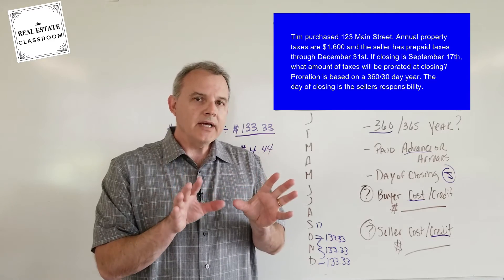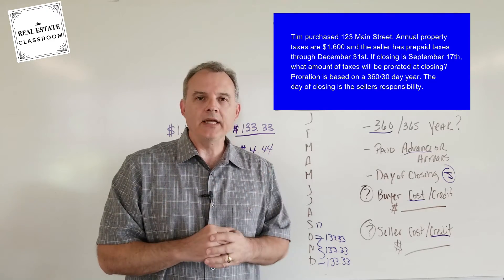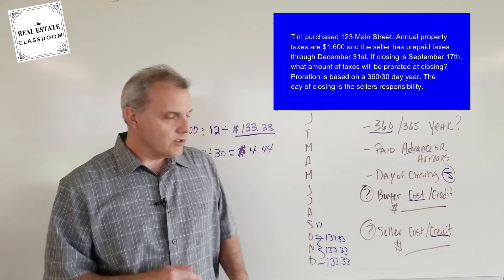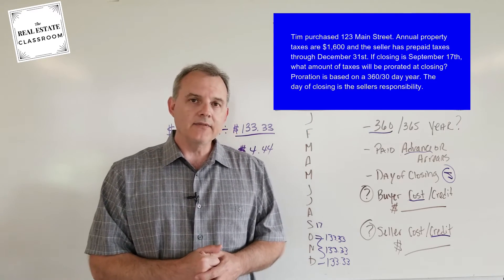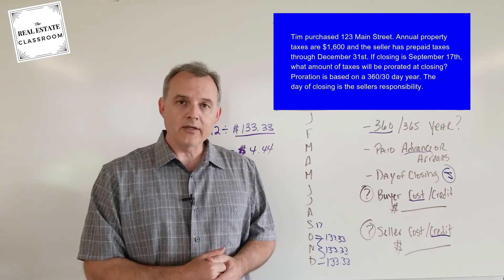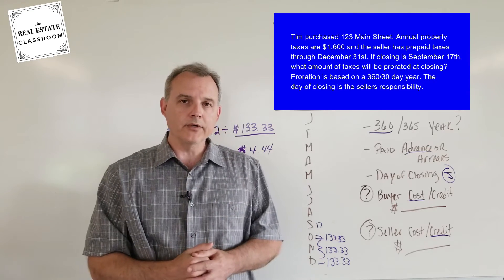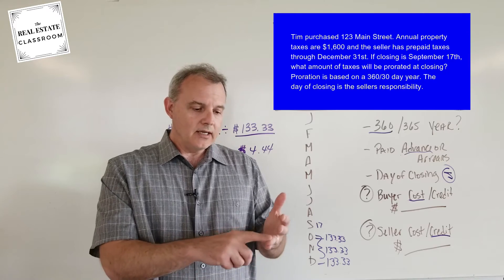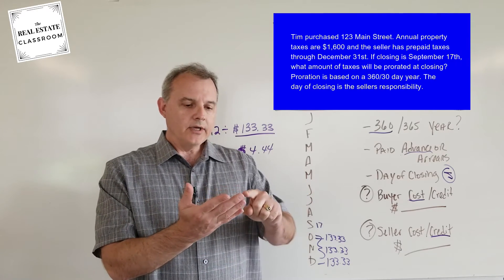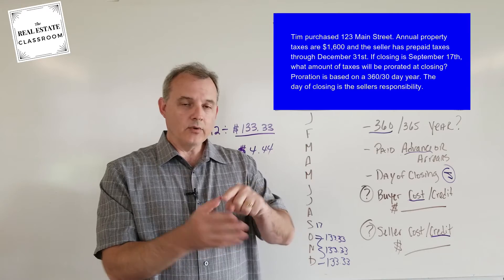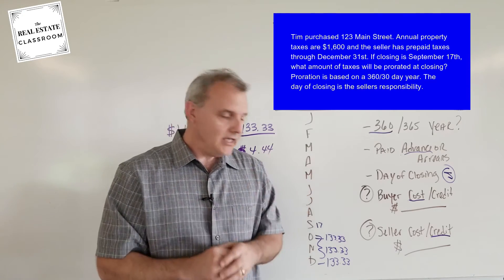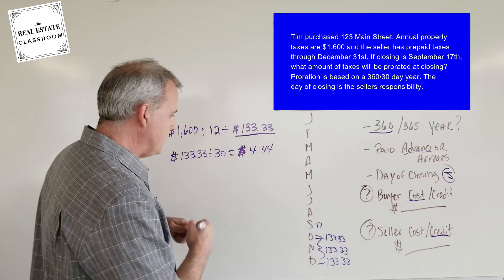Now, how many days are there in September that we're going to multiply by that $4.44? Again, just like I mentioned in a different video, we've got to use our fingers here. So the 17th, we know by the problem, is going to be the responsibility of the seller. The seller has to pay it, so the buyer is not going to reimburse them for the day of closing. So that means it's the 18th, 19th, 20, 21, 22, 23, 24, 25, 26, 27, 28, 29, 30, 13 days.